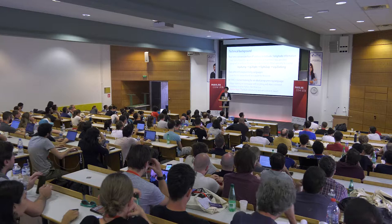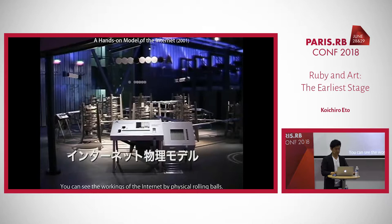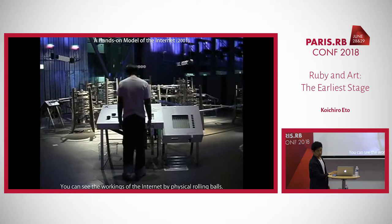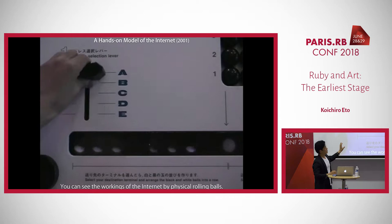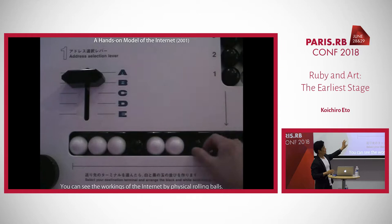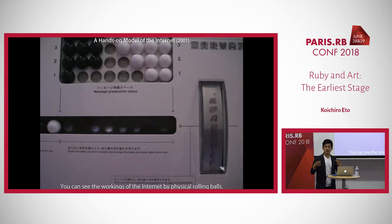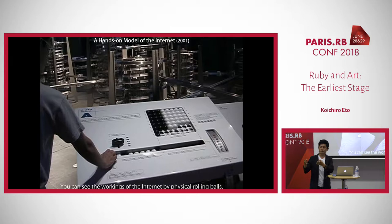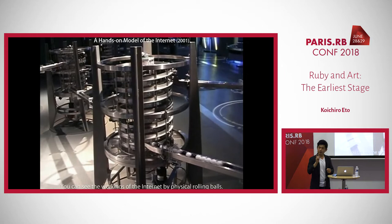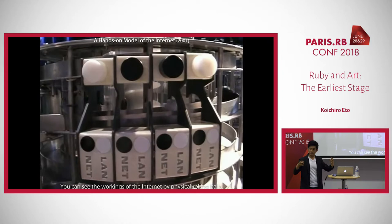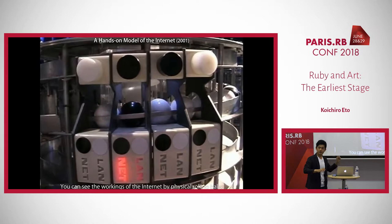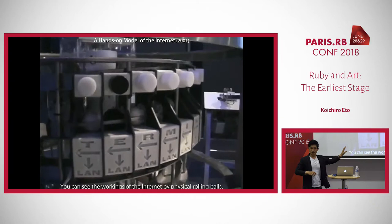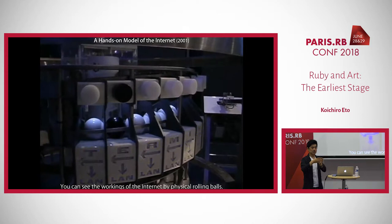Next, I'd like to talk about the next work. This is a hands-on model of the internet. This work looks like a table, and you are creating a packet — a packet exchange system. The internet is based on packet exchange. The first eight balls represent the destination of the packet, and the next eight represent one character. You can send only one character in a packet. You choose 16 balls in the packet and send the packet to the internet. These are routers in the internet — the packet goes into a router, and the router determines where to go.